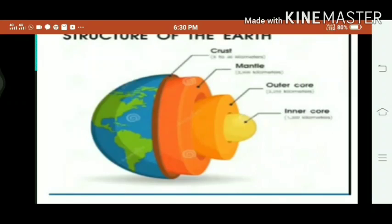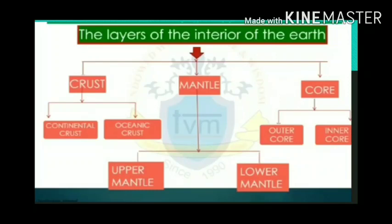Density is a measure of mass per volume. With respect to temperature and density, the earth's interior can be divided into the following layers. Observe the diagram — it is divided into three parts. The first one is the crust, which is again divided into continental crust and oceanic crust. The second one is the mantle, further divided into upper mantle and lower mantle. The third one is the core, divided into outer core and inner core.